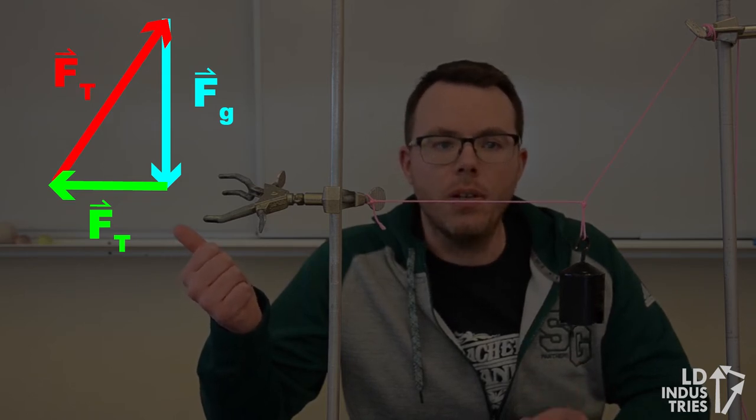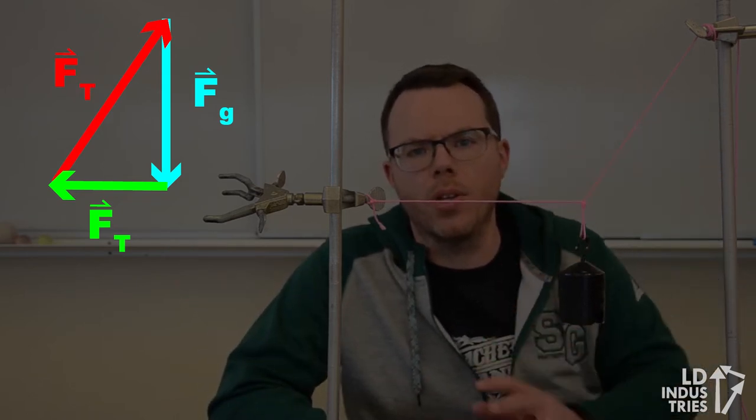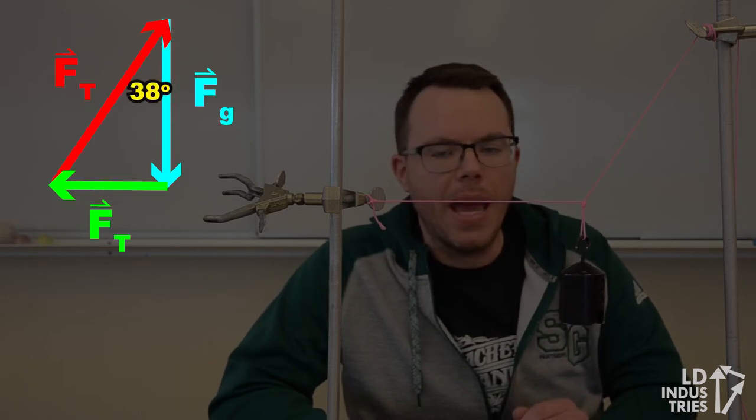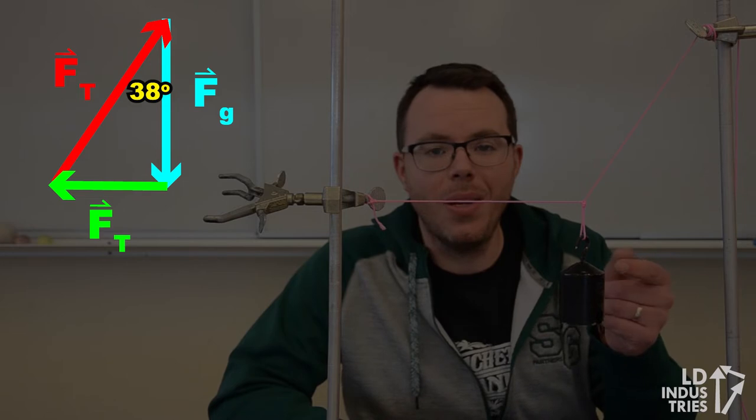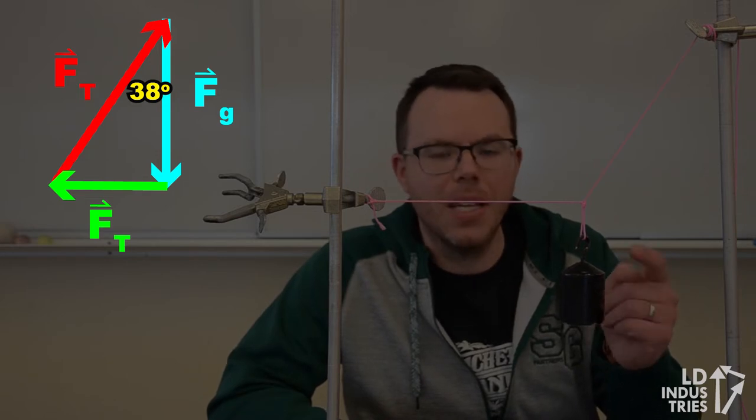We can measure the angle the string makes with the vertical. I measured that earlier to be 38 degrees, and I can put that into my diagram. Lastly, I can calculate one side of that triangle because I know the mass.